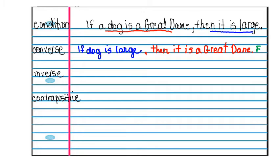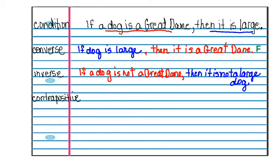Now the inverse just does the not part. So if a dog is not a Great Dane, see if you can finish it. Then it is not a large dog. And again you have to decide whether the statement can be true or false. And just because a dog's not a Great Dane, let's say it's a St. Bernard, it would still be a large dog. So it doesn't work for all examples. It does have a counter example.